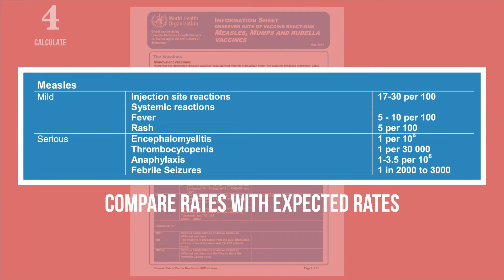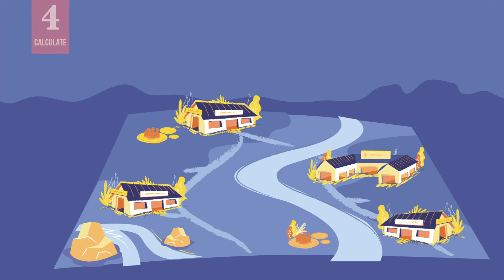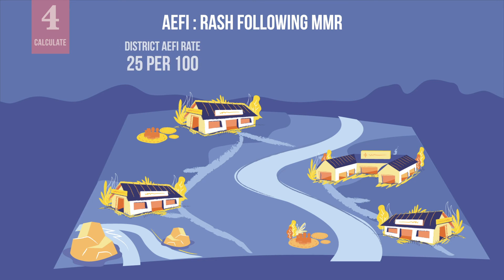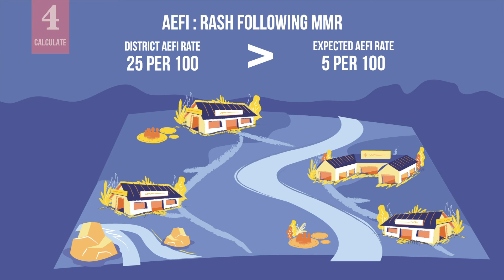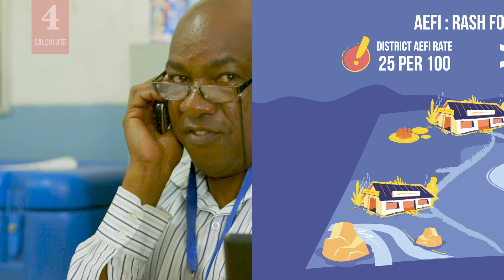Then, compare the rates you calculated with expected rates, which are available in WHO vaccine reaction information sheets. If your calculated rate is higher than the WHO expected vaccine reaction rate, there is likely a problem to investigate. For example, if you have reports of children suffering a rash following measles vaccination and you calculated a case rate of 25 per 100 doses, but the WHO information sheet for MMR shows an expected rash rate of 5 per 100 doses — since the district rate is significantly higher, this likely needs investigation. Once you complete this comparison, report your findings to the national level.